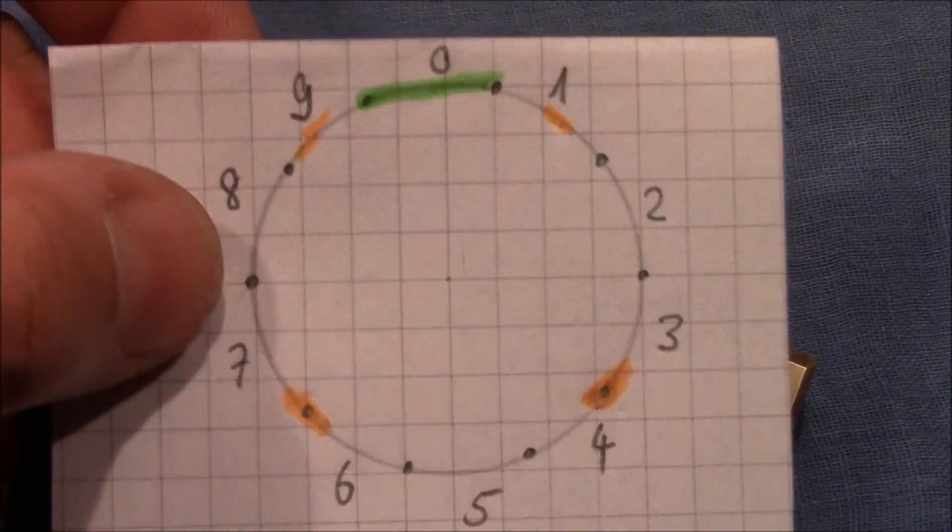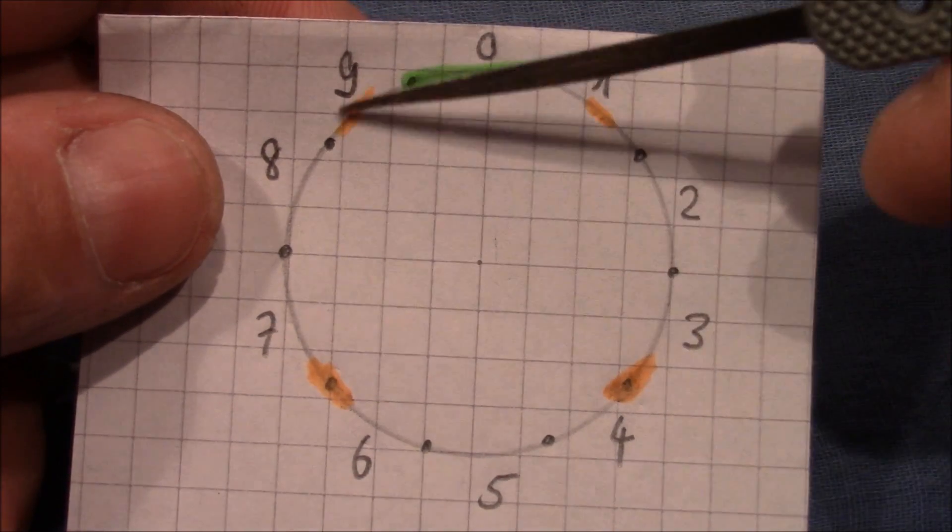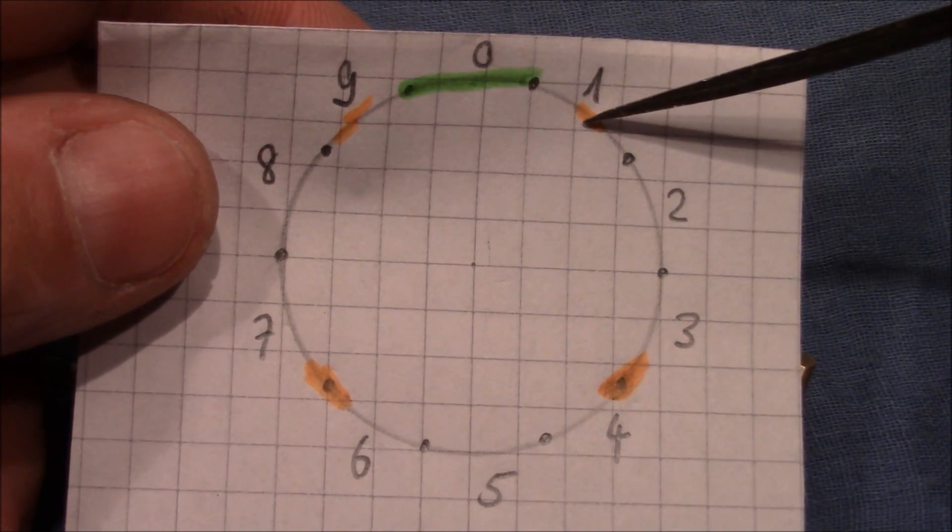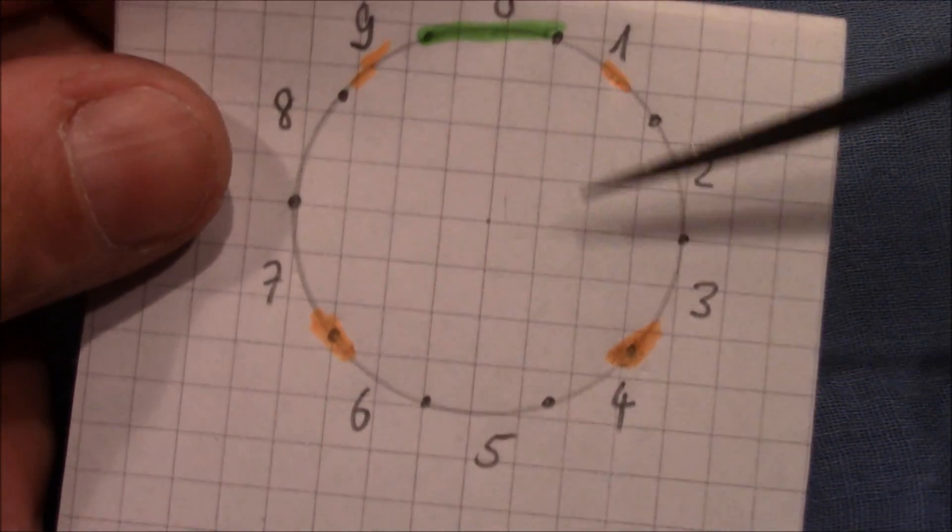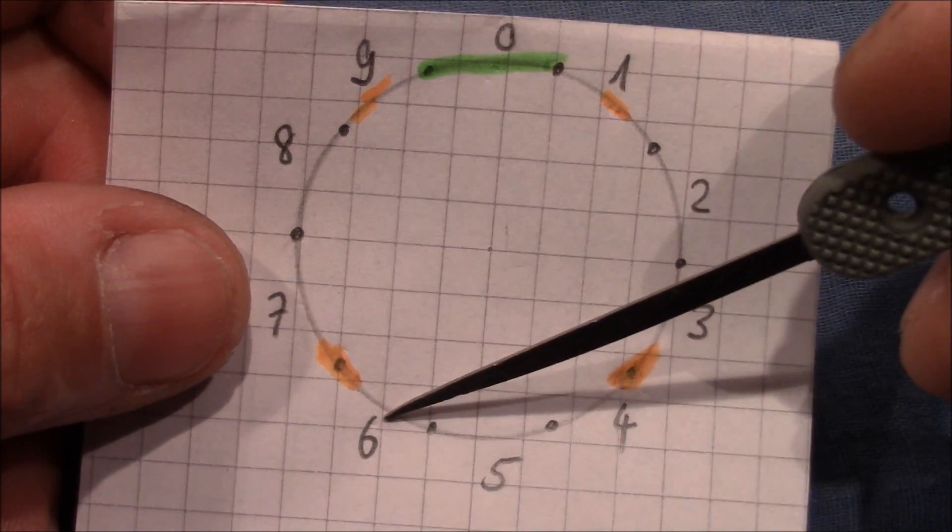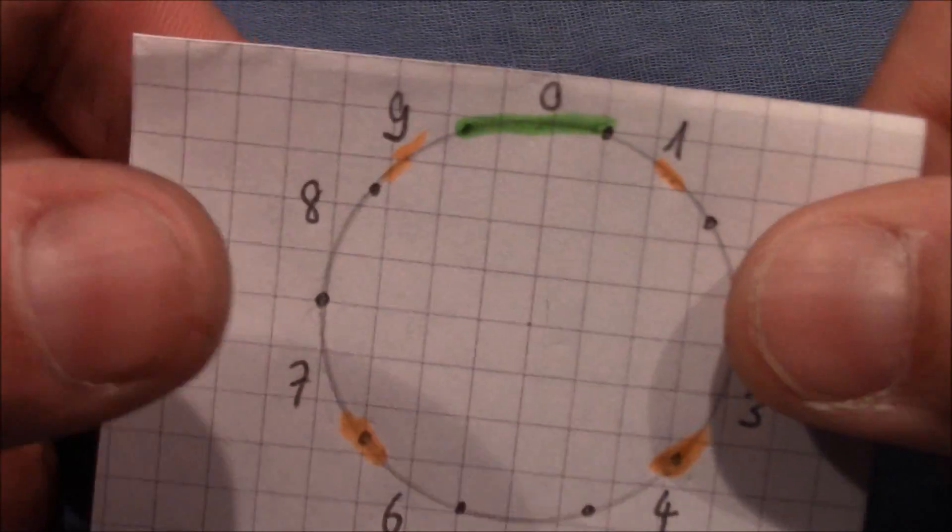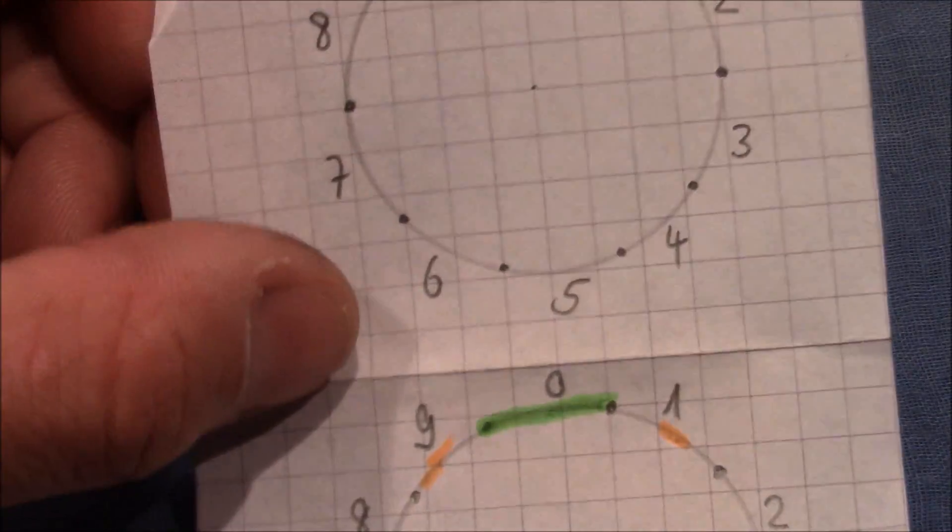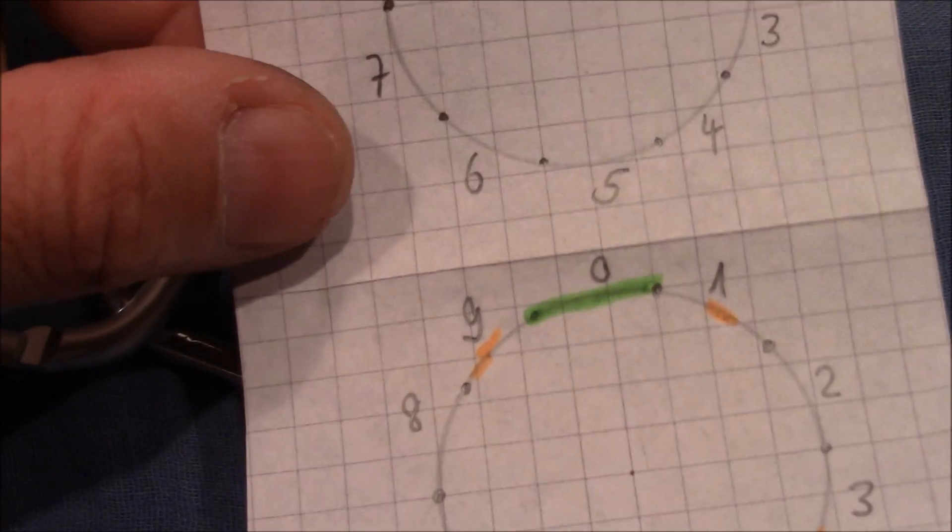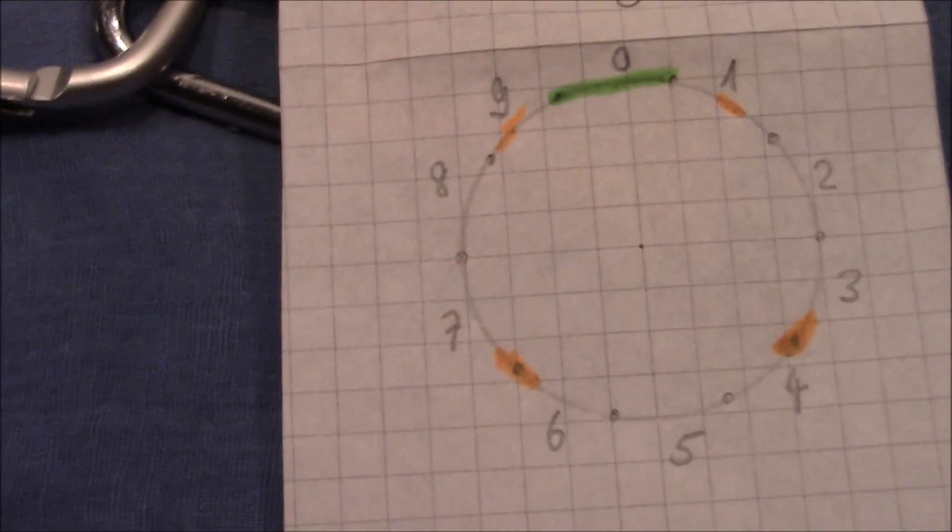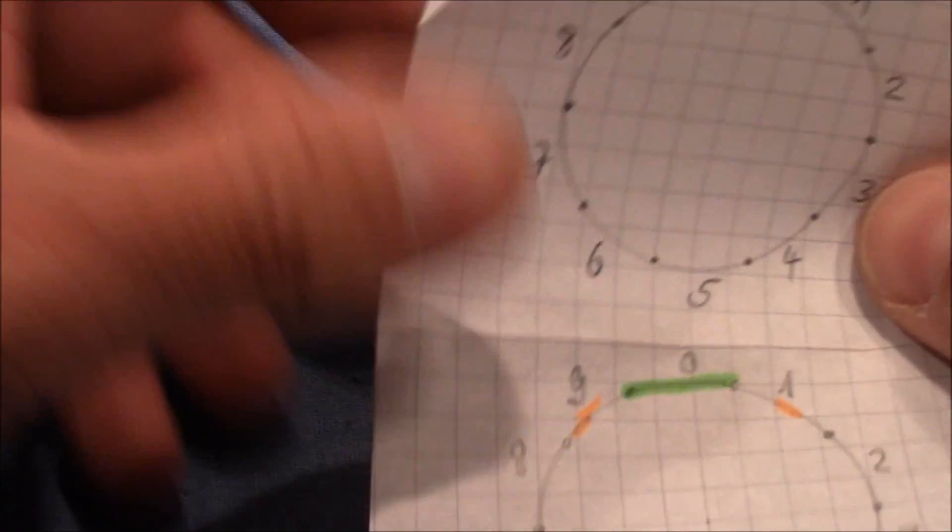So the gate situation on that wheel is displayed here. One true gate at zero, false gates at nine and one, directly connected to the one true gate, and also false gates in between two numbers, six and seven and three and four.